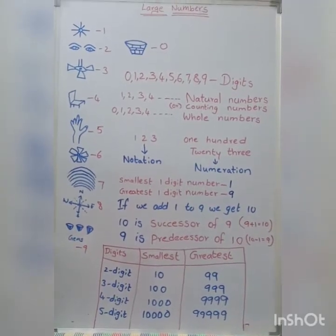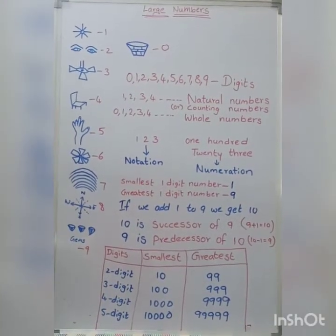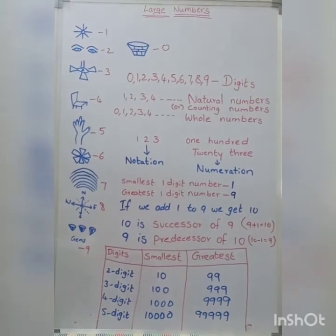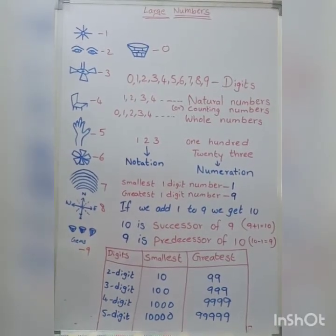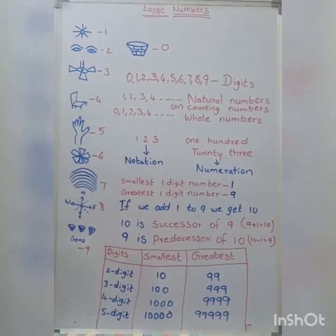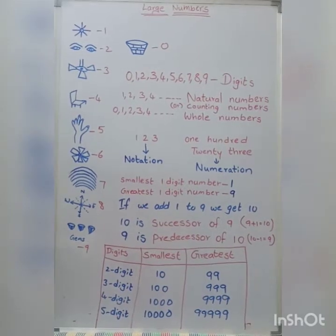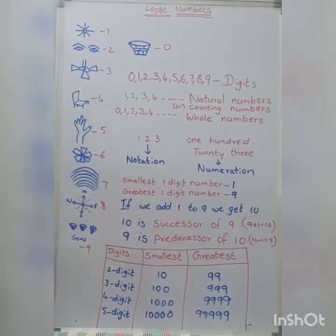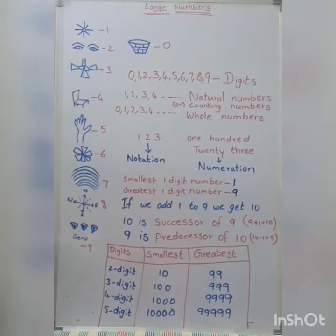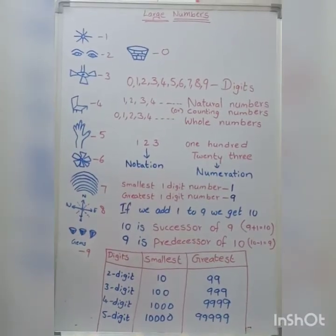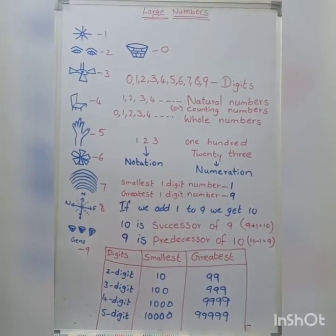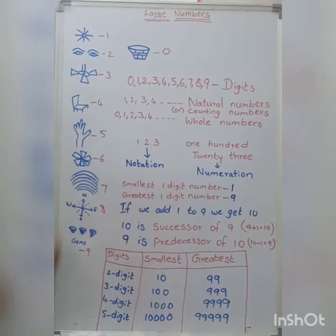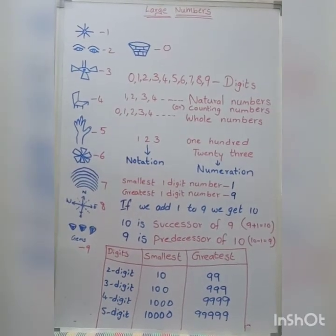We start counting from 1, 2, 3 and so on. These are called counting numbers or natural numbers. And if 0 is included with natural numbers, those are whole numbers. 0, 1, 2, 3, 4 and so on are called whole numbers.